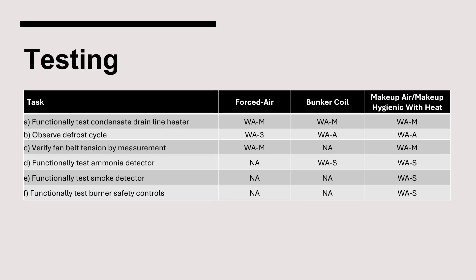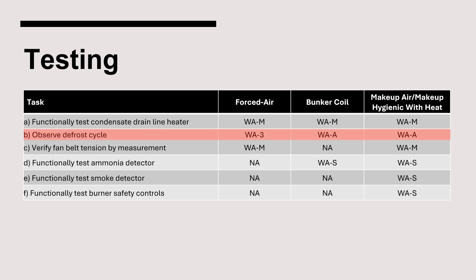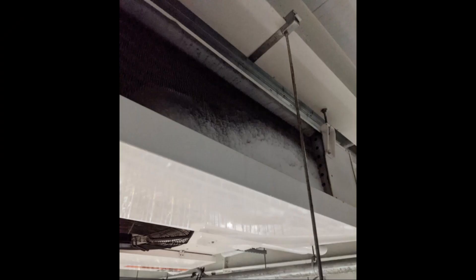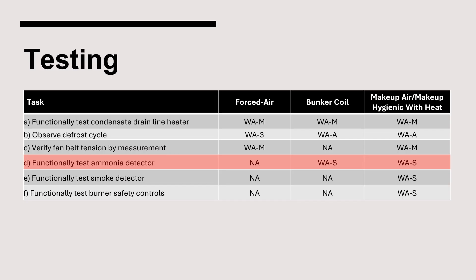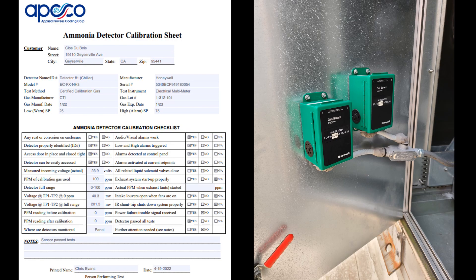I'll highlight just a few of the testing requirements for air cooling evaporators. The defrost cycle must be tested, but the frequency of the test varies depending on the type of air cooling evaporator. Where an air cooling evaporator has an integral ammonia detector, the detector must be tested semi-annually. Air handling units often have detectors inside the coil section of the enclosure, and the test should be documented as displayed.